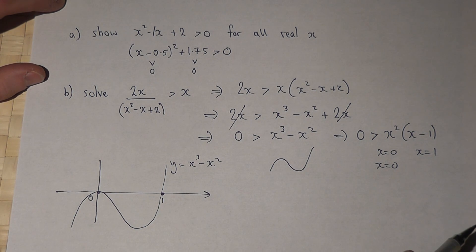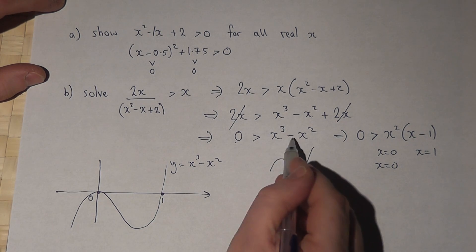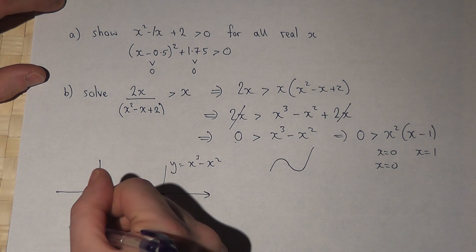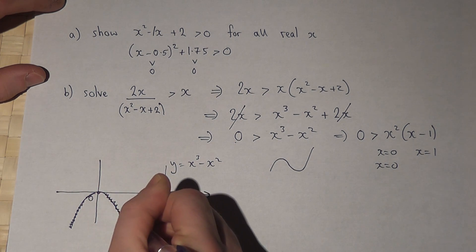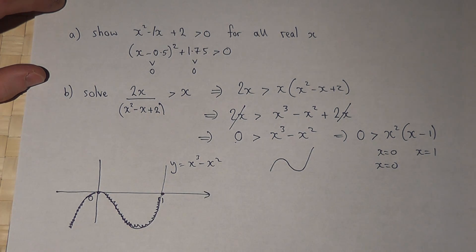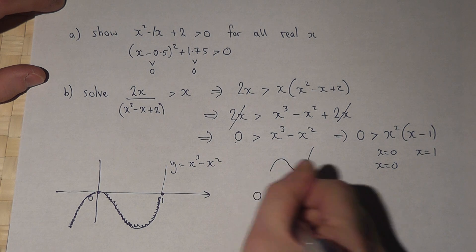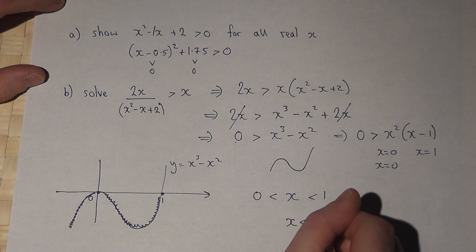Now the question asks, when is this graph less than 0? So for what values of x is the graph below the x-axis? Well, the graph is below the x-axis here and here. So there's two distinct regions: when x is between 0 and 1 and when x is less than 0.